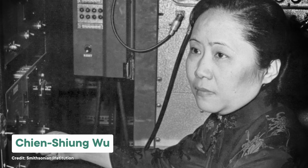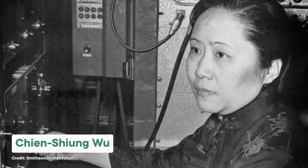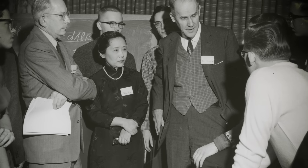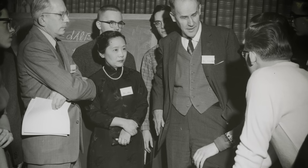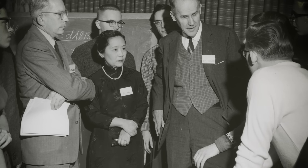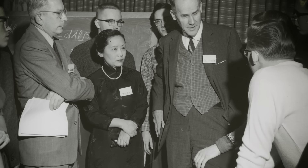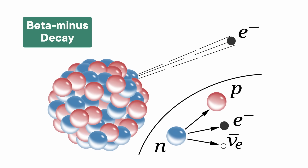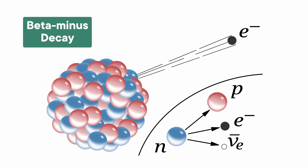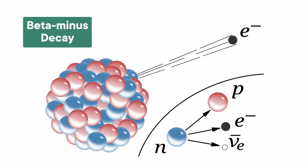Chien-Shiung Wu was born in China and came to the US in 1936 for graduate school. She received her PhD from UC Berkeley in 1940, and then, like many other physicists in America at the time, was recruited to work on the Manhattan Project. She ended up as a professor at Columbia University and became known as the leading expert in beta decay — a type of radioactive decay where a neutron turns into a proton, releasing an electron and an antineutrino. Electrons are sometimes called beta particles, which is how the process got its name.